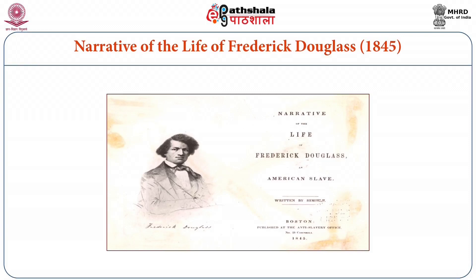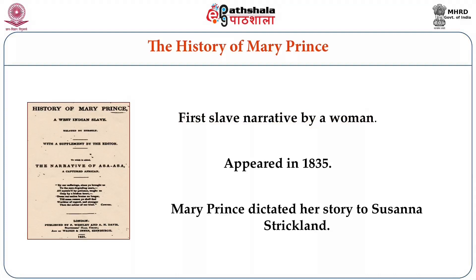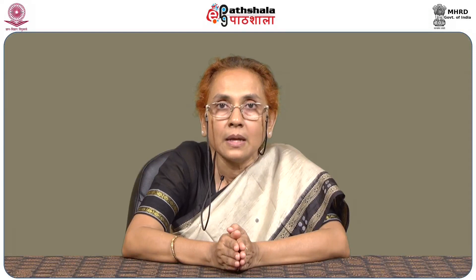The Narrative of the Life of Frederick Douglass was published in 1845. It is probably the best known slave narrative and has made its way into the curriculum of many universities. The History of Mary Prince, the first slave narrative by a woman, appeared in 1835. Mary Prince was illiterate and so she dictated her story to Susanna Strickland, who wrote it down for her. Mary Prince's narrative is antebellum, published in 1835.